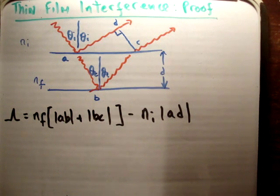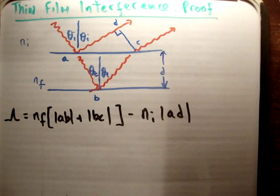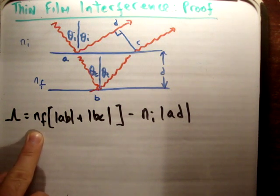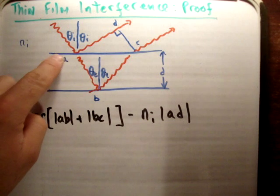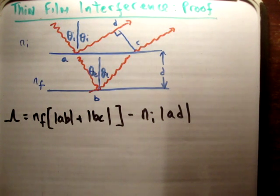So there's two lengths. We're saying it travels from A to B and B to C, and we multiply that by the refractive index in that medium. Then the distance from A to D, we multiply it by the refractive index in that medium.